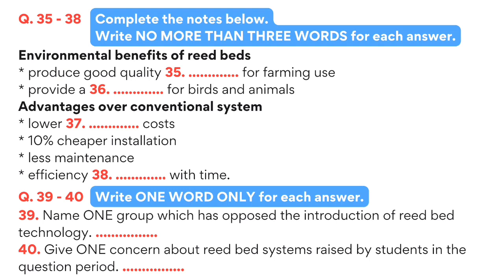What happens to reed beds in winter? Does the efficiency decrease? The above-ground part of the plants die back in cold weather, but the roots remain alive and active and the system continues to work just as effectively in winter. As soon as the weather warms up, new reeds appear and grow quickly. Is there a problem with mosquitoes in these ponds? Well, they're not exactly ponds with standing water. The beds look more like a field covered with long grass. The soil is moist, but not like a swamp. So there would be no more mosquitoes than in any other field.